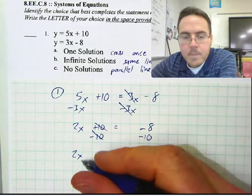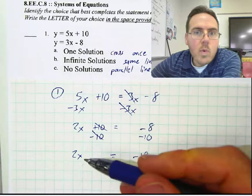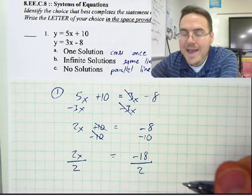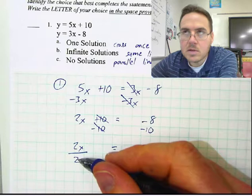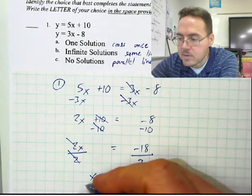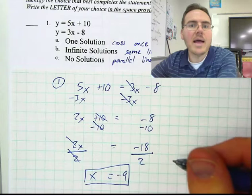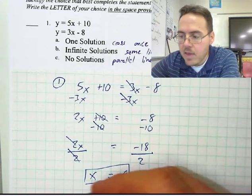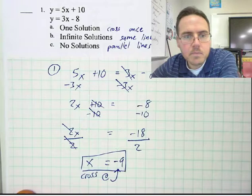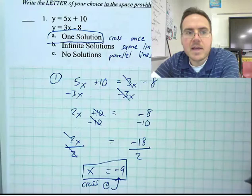This is 2 times X, so we want to do the opposite — divide by 2. We toss a fraction bar underneath both sides. 2 divided by 2 is 1, and 1 times X is just X. Negative 18 divided by 2 is negative 9. This means these two lines are going to cross each other when X is negative 9 — they cross one time. So the answer to number 1 is A: they have one solution.